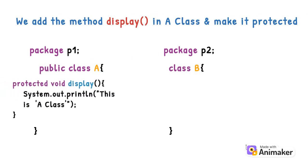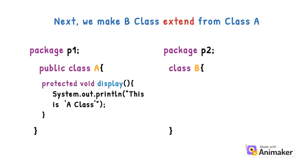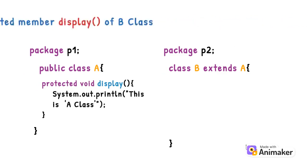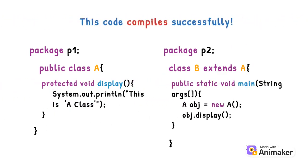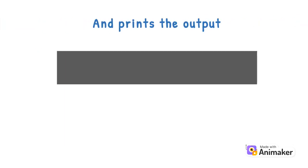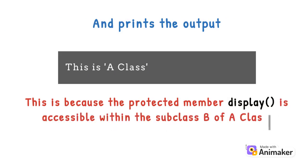We add the method display in A class and make it protected. Next, we make B class extend from A class and access the protected member display of B class. This code compiles successfully and prints the output 'This is A class.' This is because the protected member display is accessible within the subclass B of A class.